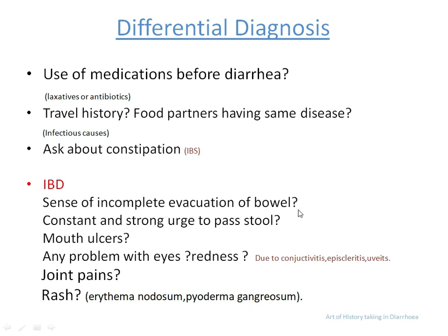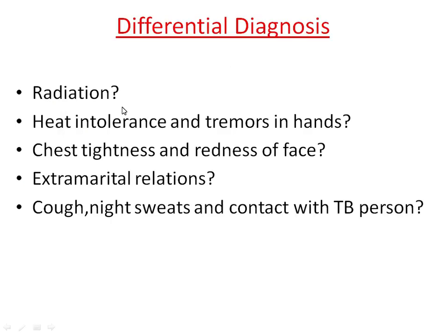In case of inflammatory bowel disease, you will ask the following questions: sense of incomplete evacuation of bowel, constant and strong urge to pass stool, ask about mouth ulcers, any problem with eyes — any redness which occurs in conjunctivitis, episcleritis, and uveitis — ask about any history of joint pains, and if the patient says yes, ask in which joints he has pain, and ask about any rash.